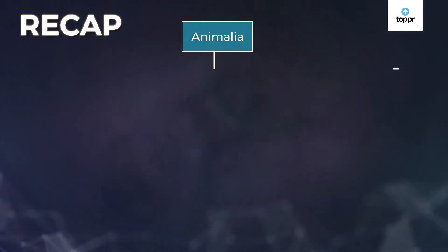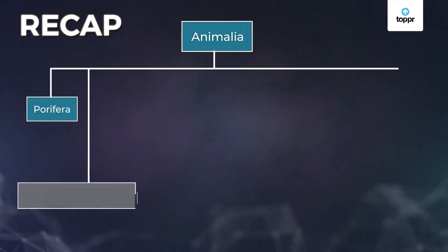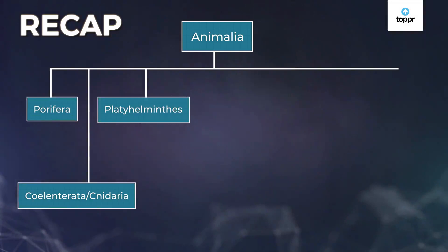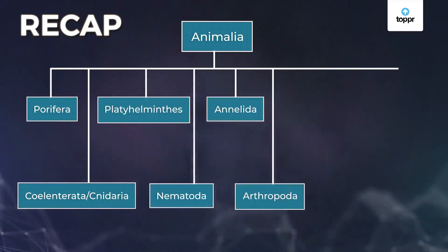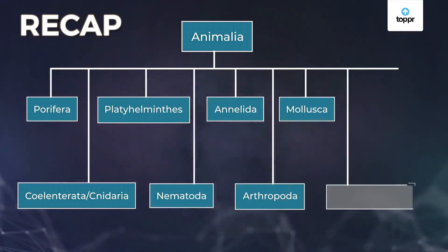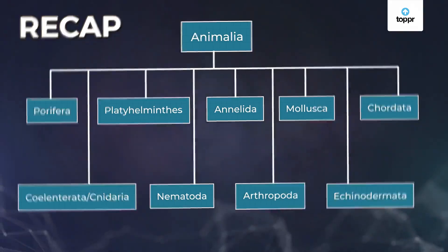Animals are categorized into smaller groups called Phyla, namely Porifera, Coelenterata or Cnidaria, Platyhelminthes, Nematoda, Annelida, Arthropoda, Mollusca, Echinodermata, and Chordata.